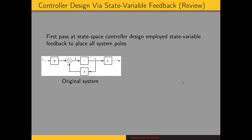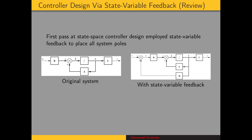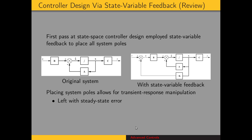Here is our original system. Whenever we wanted to obtain a desired transient response, we fed back the state variables through a gain matrix K. That gain matrix had the same number of gain values as there are state variables, so we were able to place all of the system poles wherever we wanted. However, we are left with steady state error.